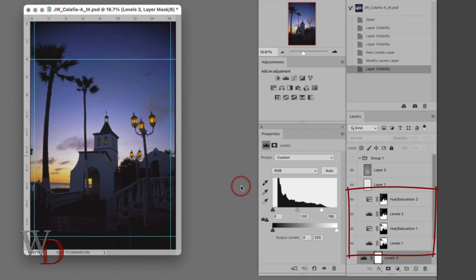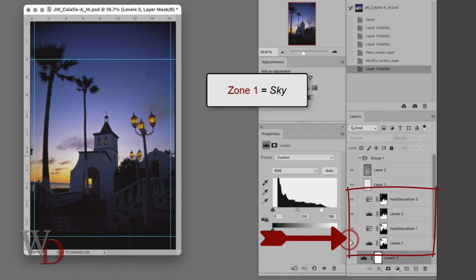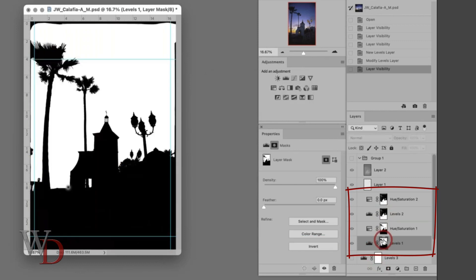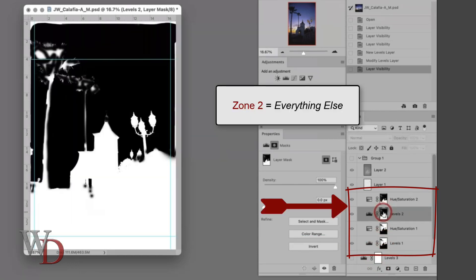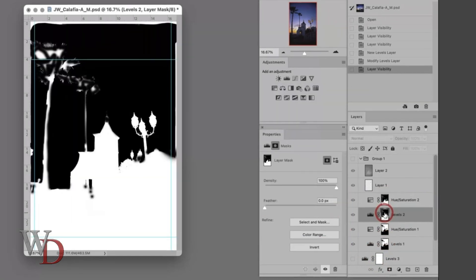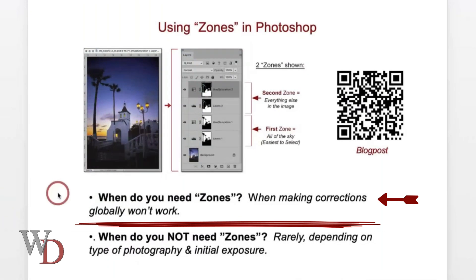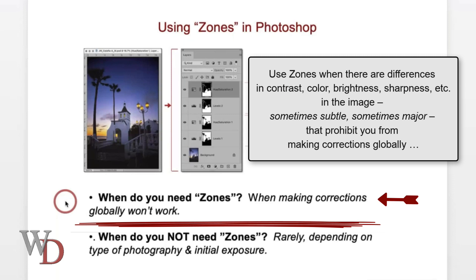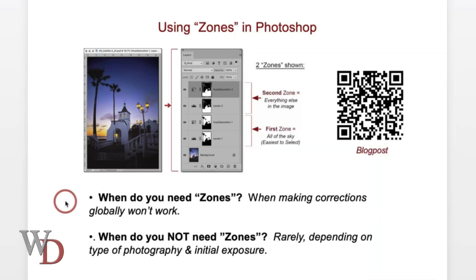In this case there are two zones: zone one is the sky, which is easiest to pick, and zone two is everything else. So when do you need zones? When making corrections globally won't work, like I just showed you. When there are differences in contrast, color, brightness, sharpness across the image — sometimes subtle, sometimes major — that prohibit you from making corrections globally. The best example is what I just showed you.